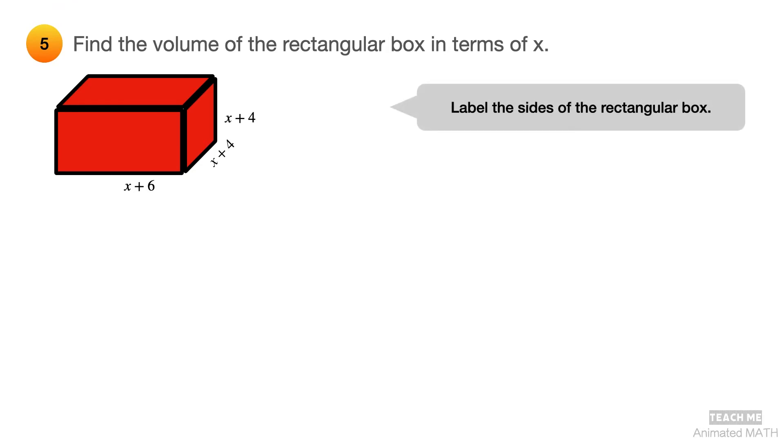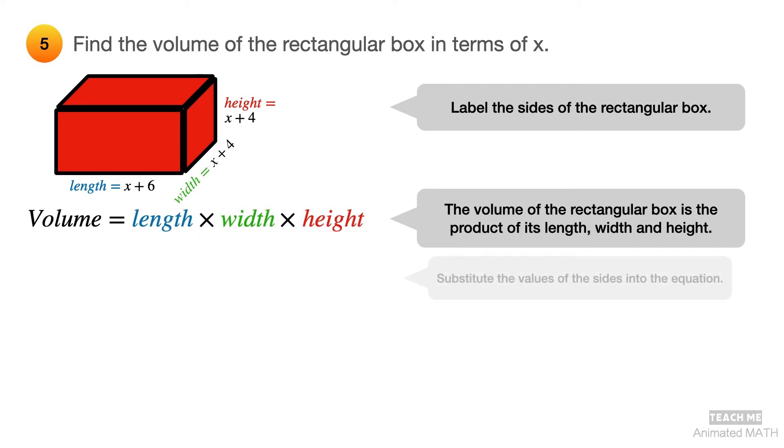Label the given sides of the rectangular box. The volume of any rectangular box is the product of its length, width, and height. Substitute the values of the length, width, and height into the volume equation. And observe that you have x plus 4 squared.